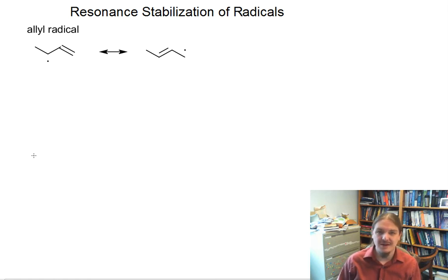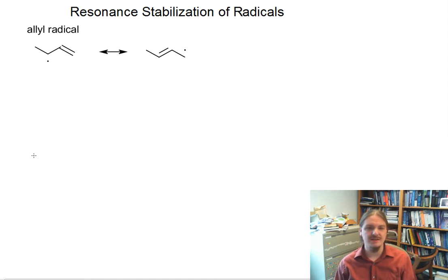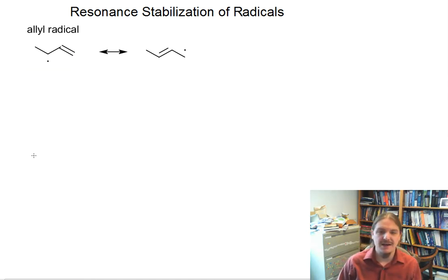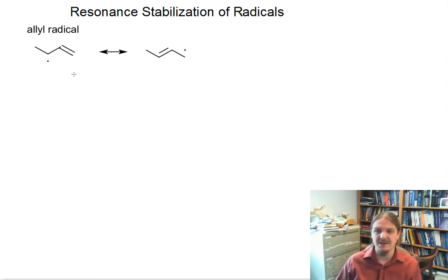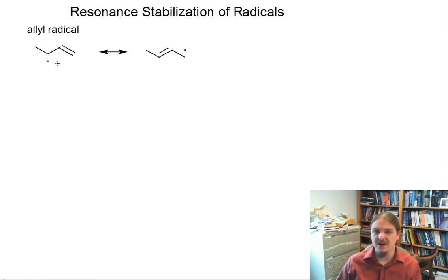Unlike ions — so cations and anions — where there are multiple different ways that you can have resonance stabilization, the allyl resonance stabilization, in other words being stabilized by nearby double bonds, is perhaps the most important type of resonance stabilization for radicals. And so here I have an allyl radical and its most important resonance contributor.